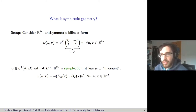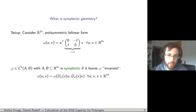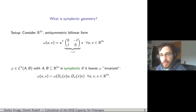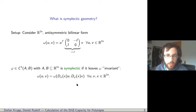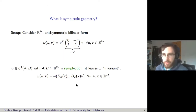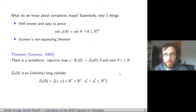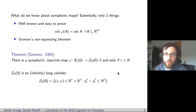We might ask what transformations preserve this symplectic form. This motivates the definition of a symplectic map: a continuously differentiable map phi is symplectic if it leaves the symplectic form invariant, meaning applying the Jacobian of phi at any point x to both arguments of the symplectic form doesn't change anything. There are essentially two known results about symplectic maps. First, the classical result that volume is preserved under symplectic maps. And a much more recent result is Gromov's non-squeezing theorem.